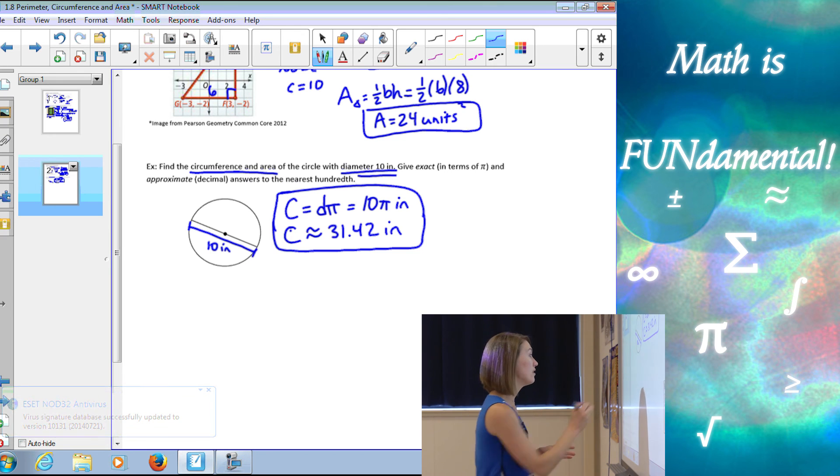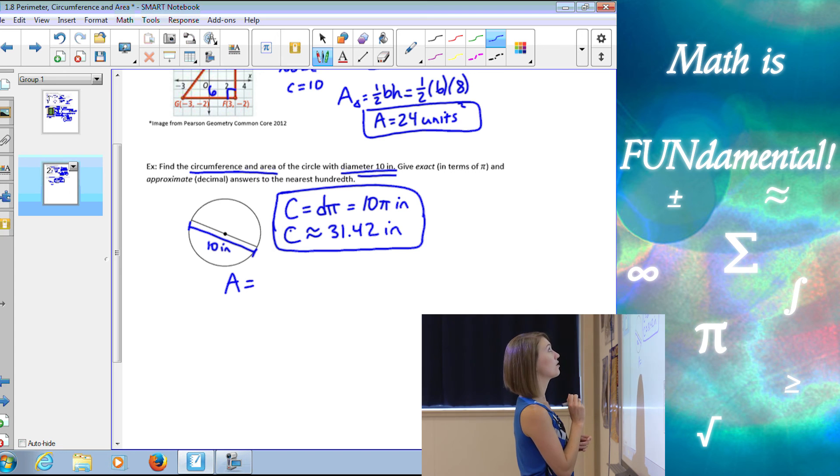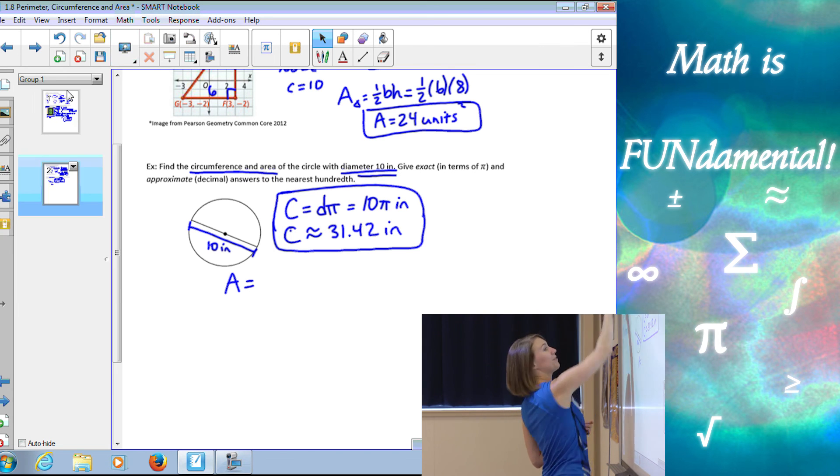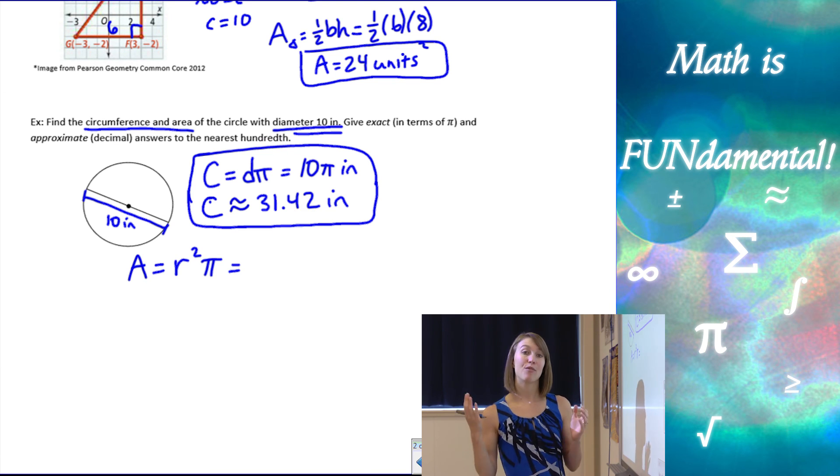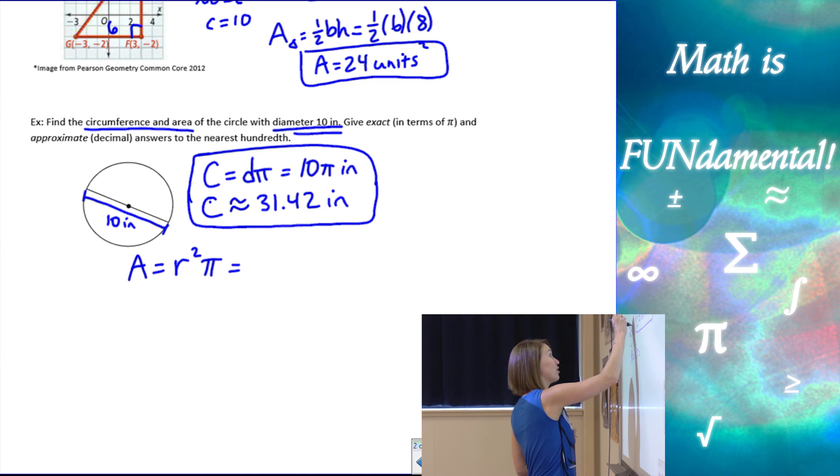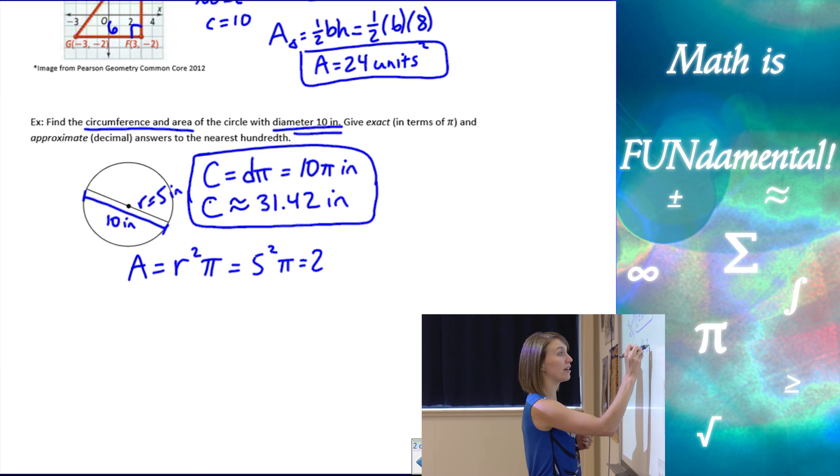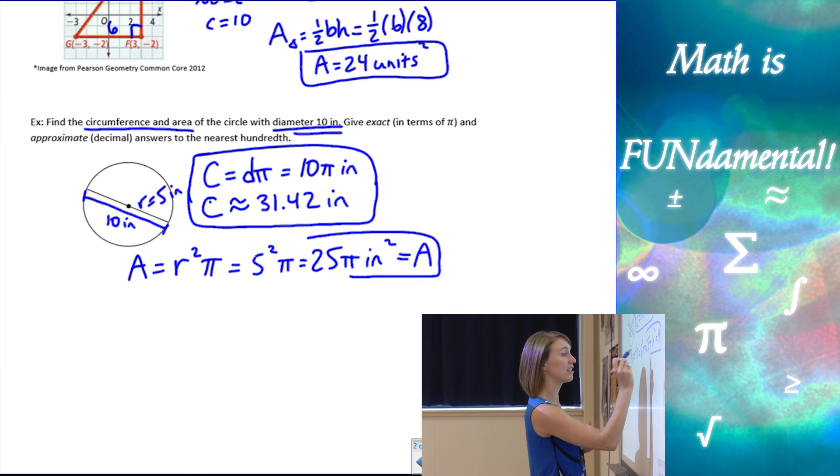And then I need to do area. Area of my circle is going to be r squared times pi. Now my diameter is 10 and the radius is always half of the diameter. So my radius is going to be five inches. So I'm going to have five squared times pi, which is 25 pi. And it's area, so we want to square our units, inches squared. We're not squaring our answer, we're just squaring the units. So that's going to give me my exact area.